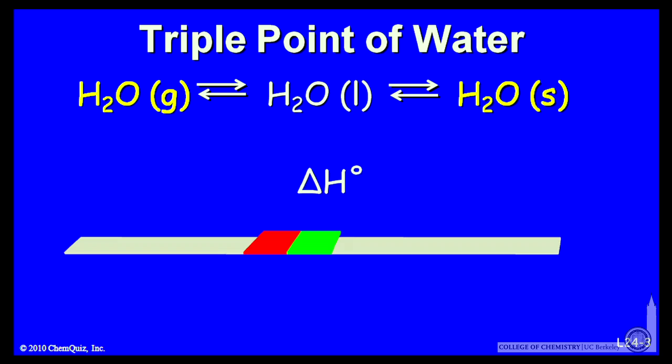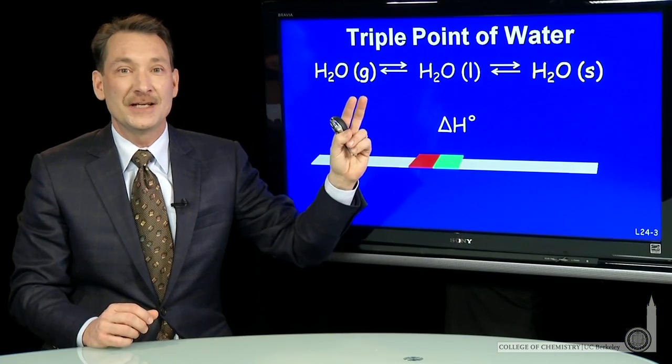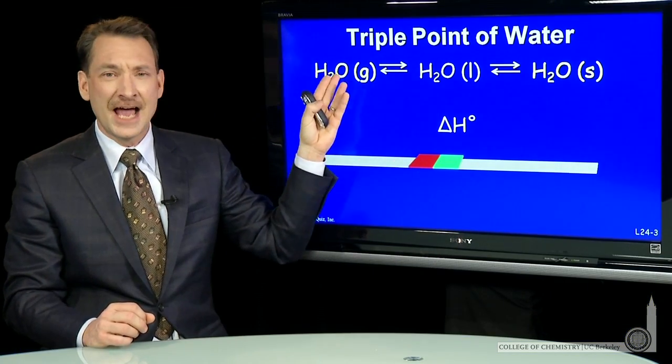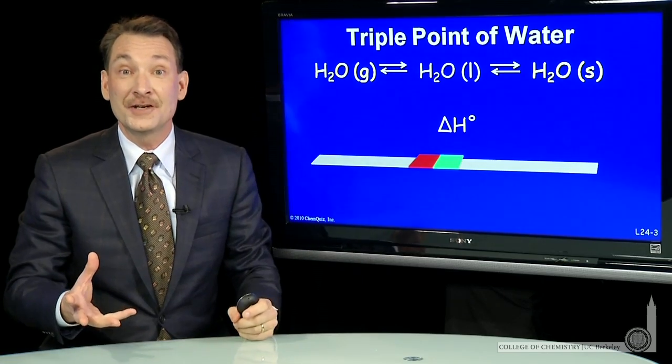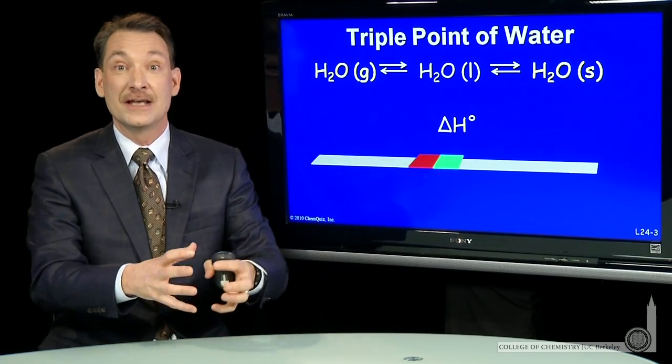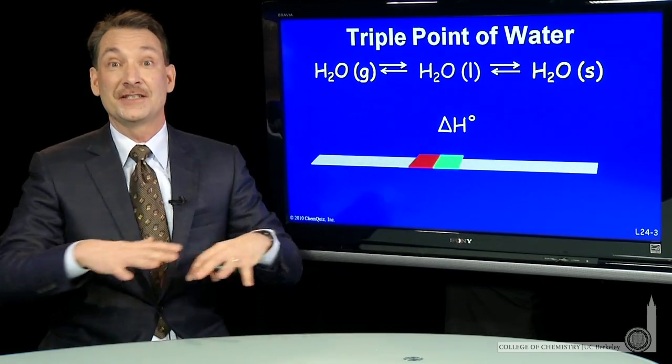Now, you might say, how can these three phases all be in equilibrium? I know if I go from the liquid to the gas, that's an increase in entropy. I go from the relatively constrained liquid to the many microstates of the gas.